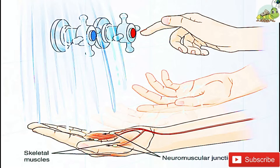In this example, the action potential travels — a process known as propagation — along the axon from the axon hillock to the axon terminals and into the synaptic end bulbs. When this signal reaches the end bulbs, it causes the release of a signaling molecule called a neurotransmitter.